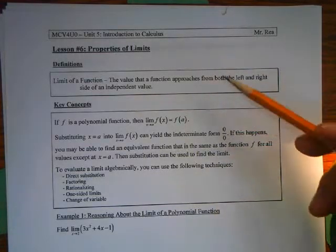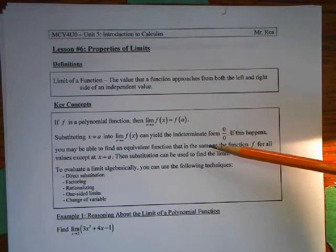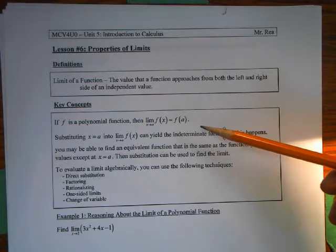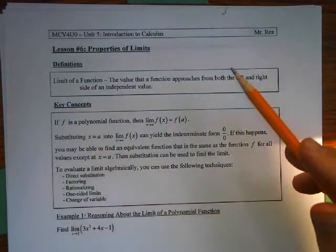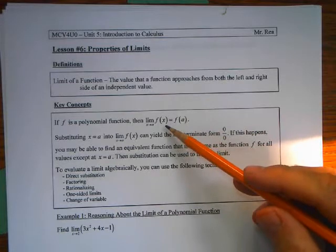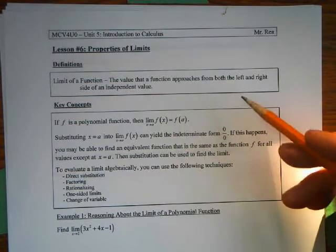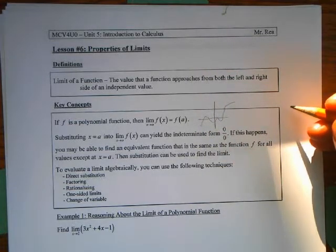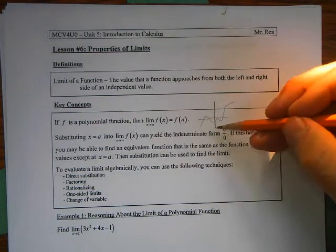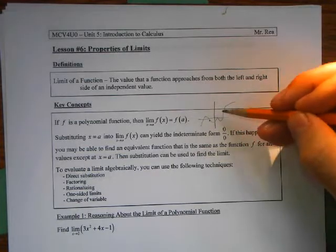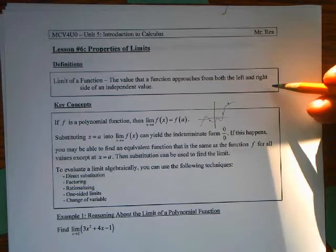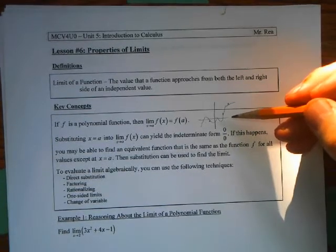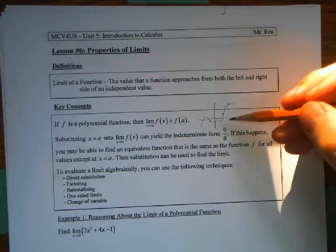We're looking at properties of limits. If you remember, a limit of a function is the value that the function approaches from both the left and right side of a specific value. Now, importantly, if the function is a polynomial function, then the limit of that function at any value of x is always just the value of that function at x. So for any polynomial — linear, quadratic, or higher degree — you pick any point, approach from left or right, they're both approaching the same point. For polynomial functions, just plug the value in and that's the limit.